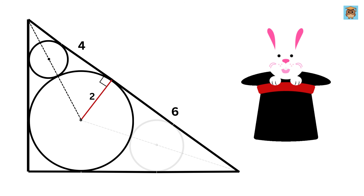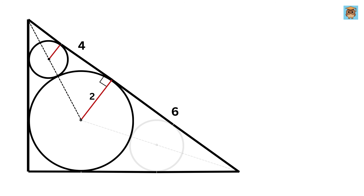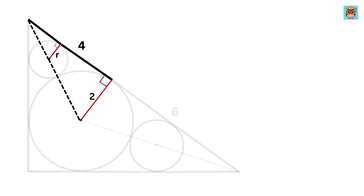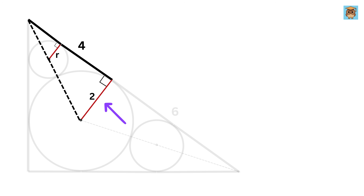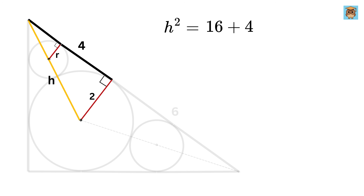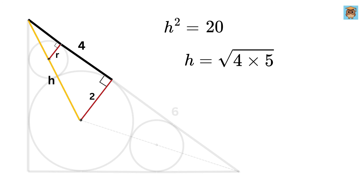Here comes the real magic. Draw the radius of the smaller circle. This will be a right angle because the radius is perpendicular to the tangent. Label this radius as r. Now consider this right triangle. If this is 4 units and this is 2 units, then h² = 4² + 2² = 16 + 4 = 20. Thus h = √20 = √(4×5) = 2√5.